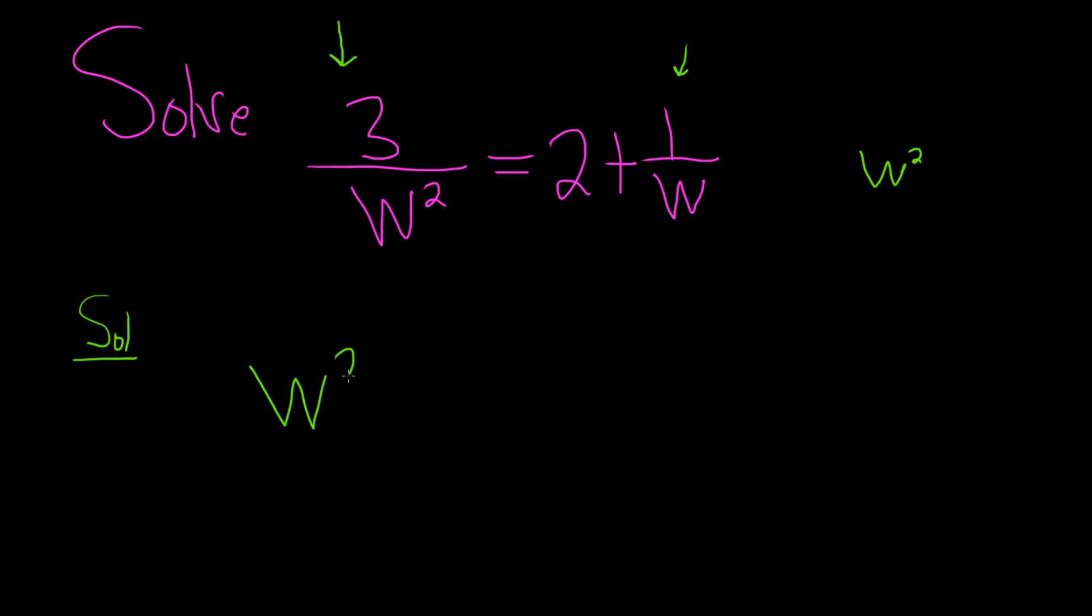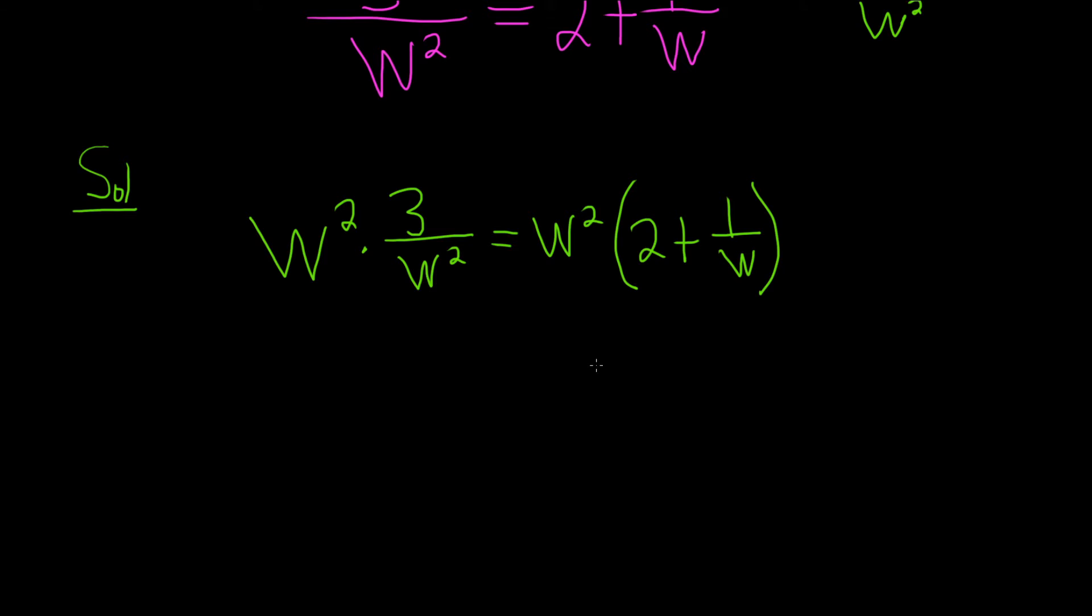So W squared times the left hand side, 3 over W squared, is equal to W squared times the right hand side, 2 plus 1 over W. Again, just multiplying both sides by W squared. So here you see they cancel right away. This is 3 and that's equal to, so now we'll distribute the W squared. W squared times 2 is going to be 2W squared and then plus. And then W squared times 1 over W is going to give us just W, right, because one of the W's will cancel.